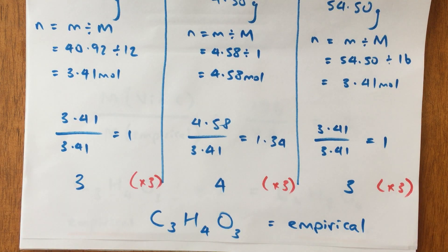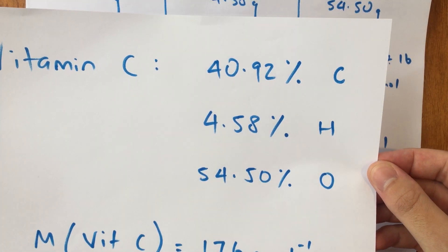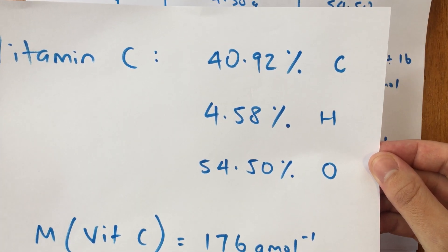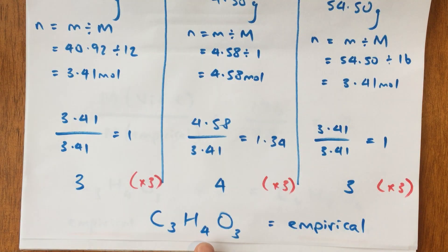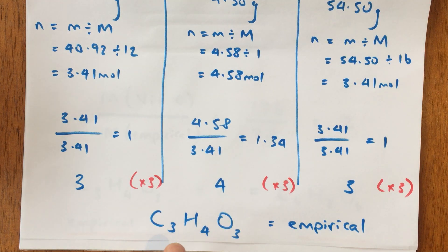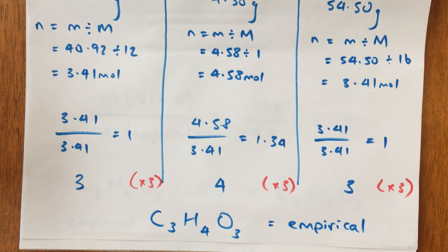I can now express that as an empirical formula showing the simplest whole number ratio of elements present, which comes out as C3H4O3 — the empirical formula for vitamin C. So starting with 40.92% carbon, 4.58% hydrogen, and 54.50% oxygen, we've arrived at the empirical formula C3H4O3. The second part of the question is to work out the molecular formula. This ratio means for every 3 carbons I have 4 hydrogens and 3 oxygens, but I want to know the actual type and number of atoms present in the vitamin C molecule.